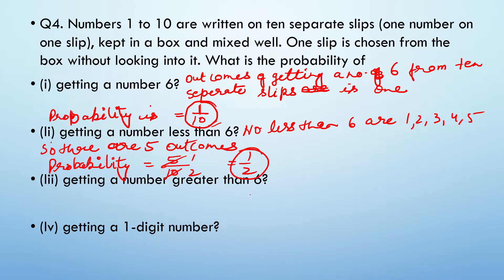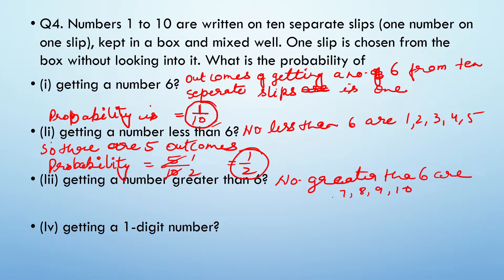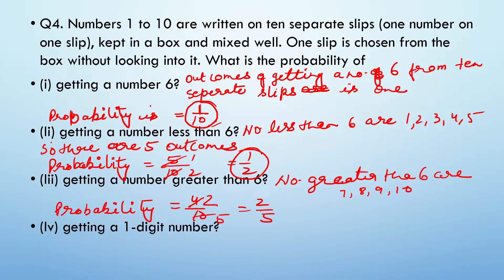Next: getting a number greater than 6. Numbers greater than 6 are 7, 8, 9, and 10 — that is 4 numbers. So outcomes will be 4. Probability = 4 upon 10 = 2 upon 5. Remember: total number of outcomes always goes in the denominator, favorable outcomes in the numerator, then simplify.